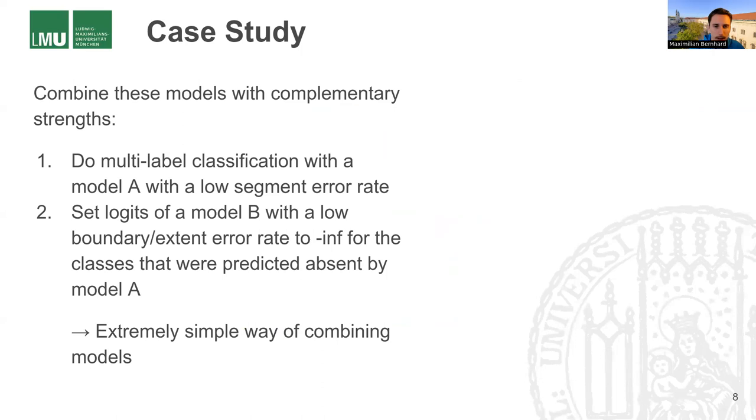And we did this by taking one model A that has a low segment error rate for multi-label classification. So this model is supposed to say which classes are present in an image. And then we take the logits of a second model B that has low boundary and extent errors. And then we set the logits for the classes that were not predicted by model A to minus infinity to rule them out.